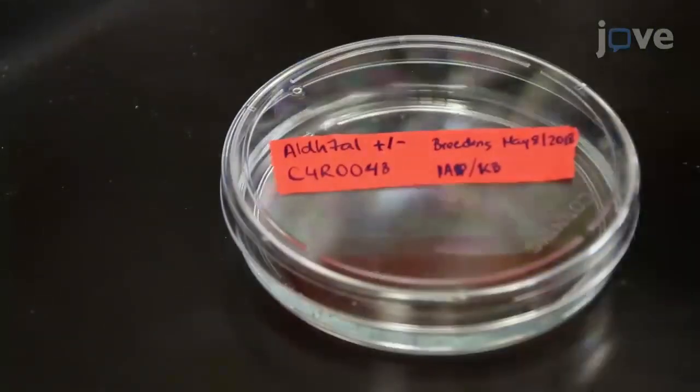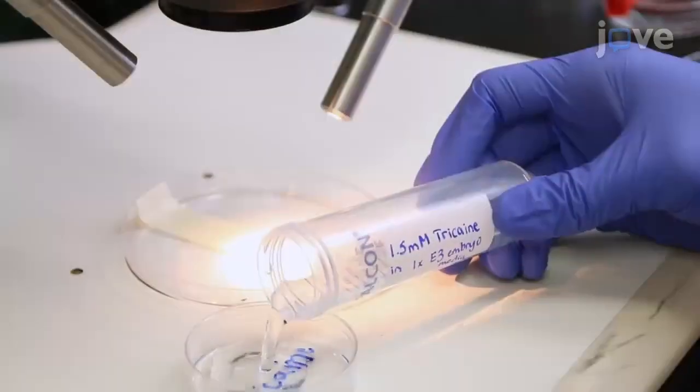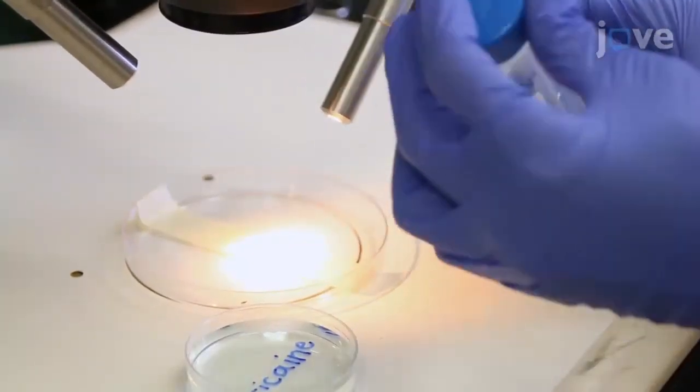Place 3 to 5 day larvae in a petri dish and anesthetize in 1.5 mM tricaine in 1X E3 embryo medium.